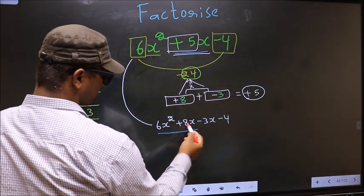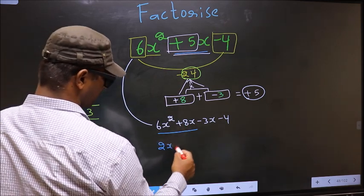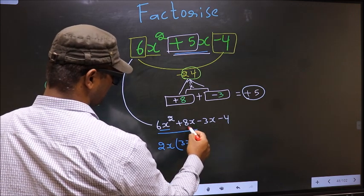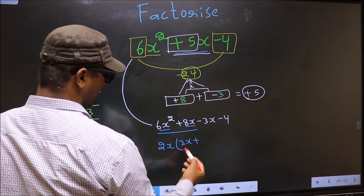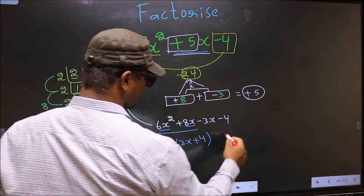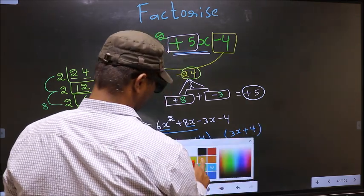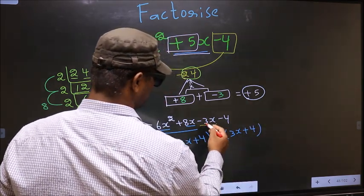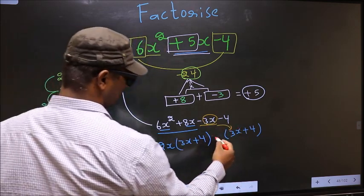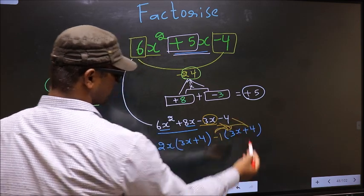From these two terms, what you can take out common is 2x. So here you get 3x, plus from this 2x out, so you get 4. Now whatever you got here, here also you should get the same thing. Now from this, 3x has gone inside, so outside you get -1. Even if you multiply and check, you still get the same thing.